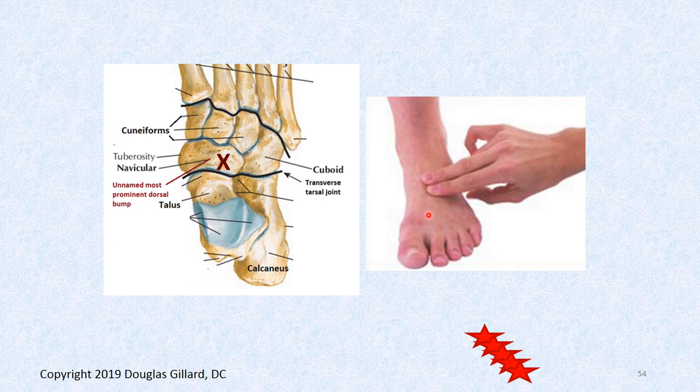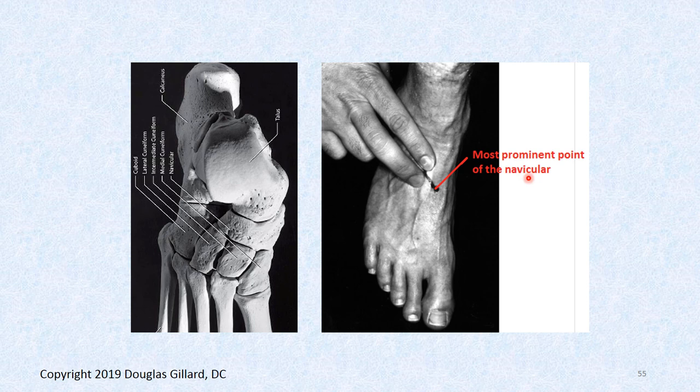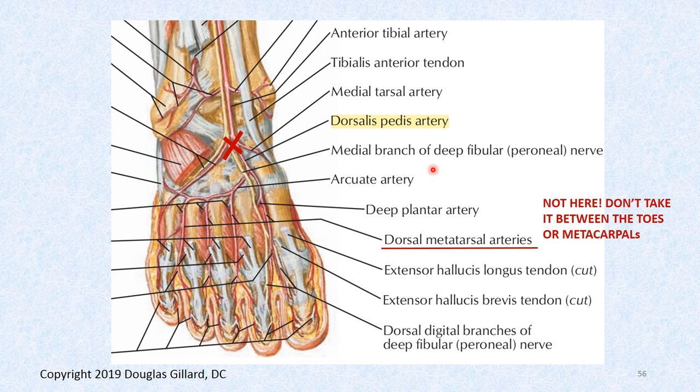The dorsalis pedis is a pet peeve of mine — here's the anatomy: the dorsalis pedis artery is right here at the crack. It splits into the arcuate artery and another branch. Down here are the dorsal metatarsal arteries. So stay up at the crack on the navicular. If you can't find it there, go out laterally — Bates even shows going further lateral. But always start next to the extensor hallucis longus tendon, right at the crack of the ankle.